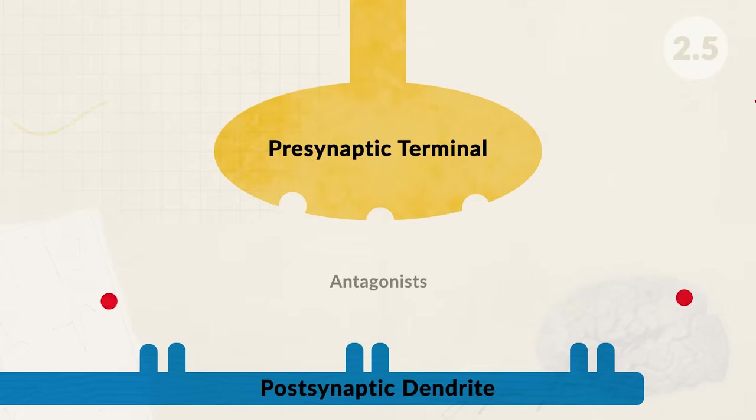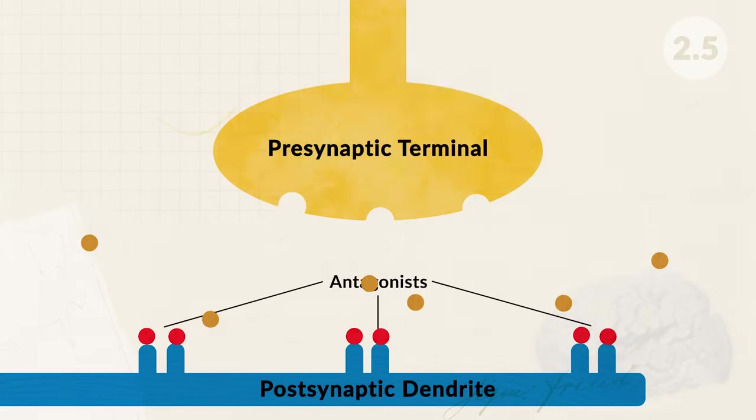Antagonist drugs work in multiple ways — they either block the neurotransmitters from being released from the presynaptic axon terminal, or they connect to the postsynaptic receptors and block the intended neurotransmitters from binding. Examples of agonist substances include anti-anxiety medications such as Xanax, which increases GABA, decreasing neural activity and calming people down, and Prozac, which is used to treat depression by delaying the reuptake of serotonin, making it more available. Opioids are another example of an agonist substance. Examples of antagonist substances include medication for schizophrenia, which blocks dopamine receptors, and alcohol, which blocks the release of glutamate, acting as a depressant for the nervous system.